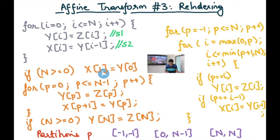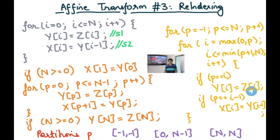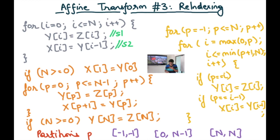For the second partition from 0 to n minus 1, I iterate p from 0 to n minus 1. Both statements execute, so I paste the statements without the predicate tests. y_i equals z_i becomes y_p equals z_p because p equals i. And x_i equals y_{i-1}, with i becoming p plus 1, translates to x_{p+1} equals y_p.